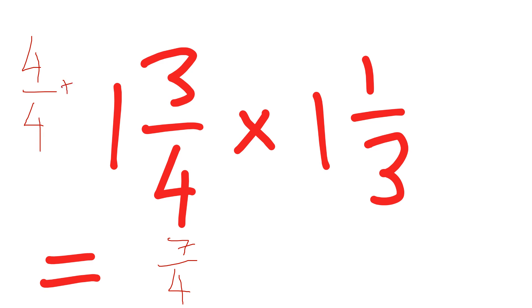And then I'm going to multiply here, one and one third. So one whole will equal three thirds, three thirds plus one third is equal to four thirds.